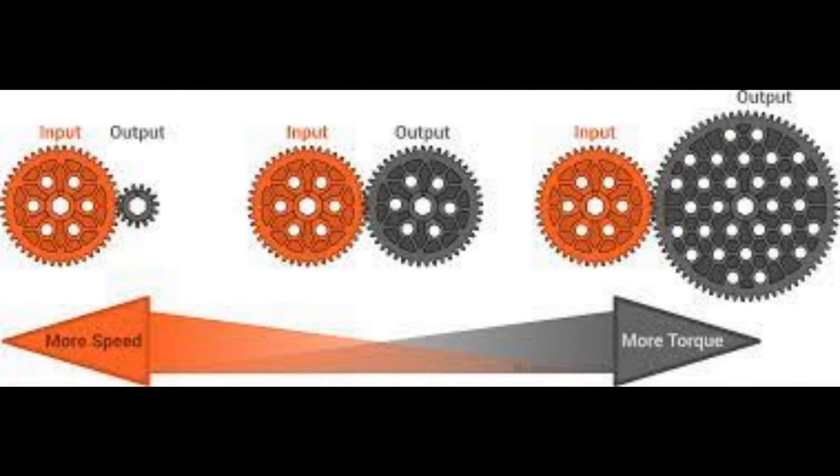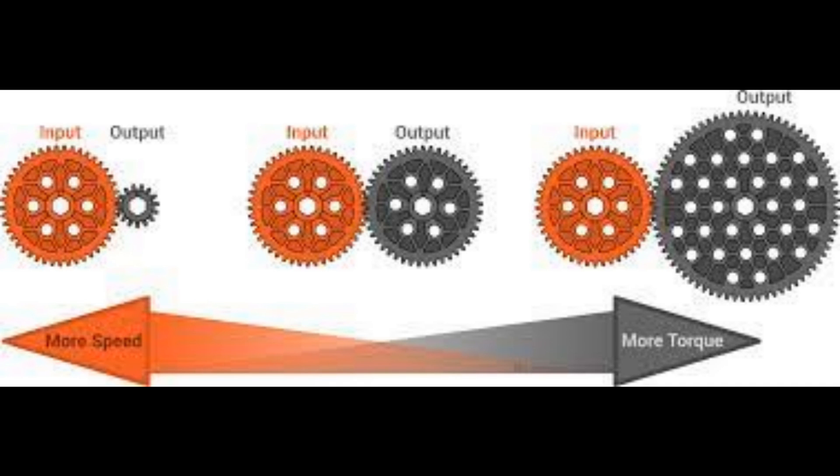Now in terms of changing position and direction, that's all very interesting but not really of much interest here because it's straightforward and not really very confusing. The bit that is confusing is changing the speed and changing the torque, and it's confusing because they are not independent of each other — they relate directly to each other.